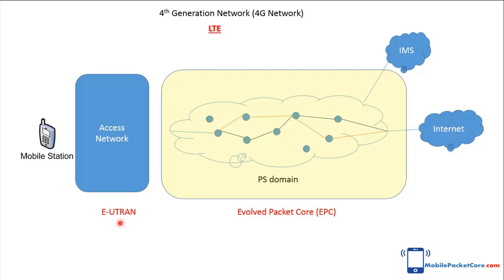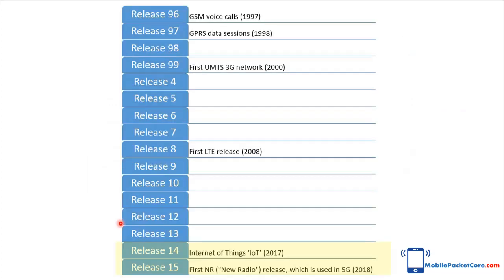In later 3GPP standards, Release 14 and 15, 3GPP introduced new technologies like Internet of Things, IoT, and the 5th generation, 5G, network.